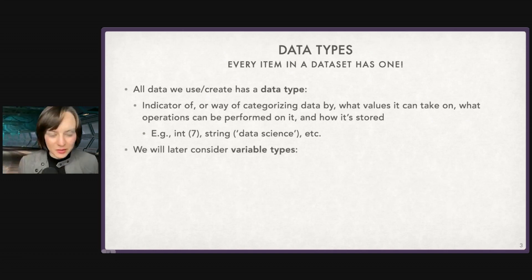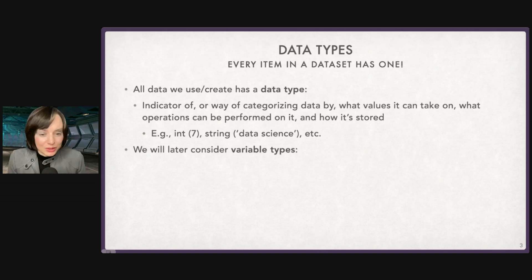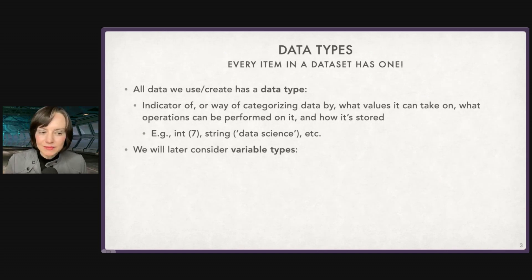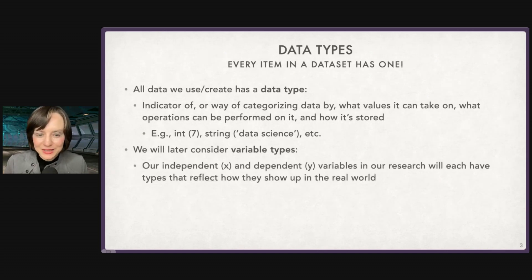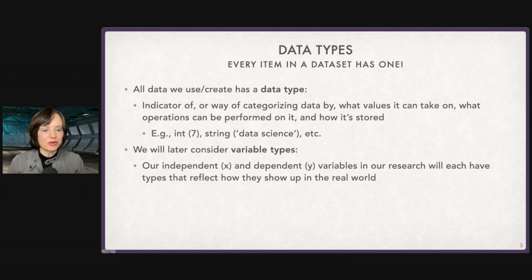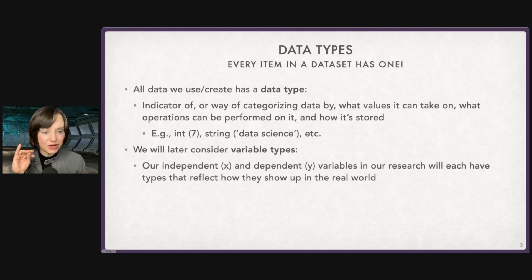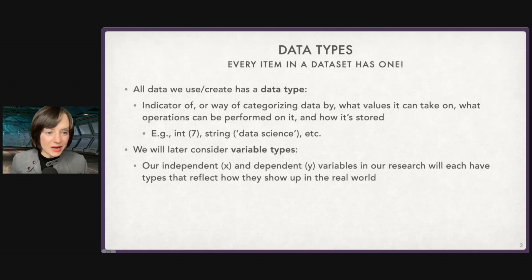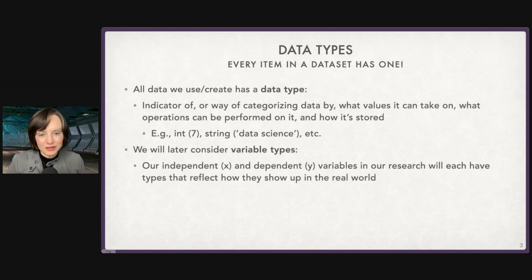Later on, we will consider something called variable types. Confusingly, it's not the same thing as a data type. Variable types are going to refer to the qualities of our independent and dependent variables. If you watched the first few videos in this series, you know all about IVs and DVs. If you haven't, don't worry about it — we'll be getting to those more as well.